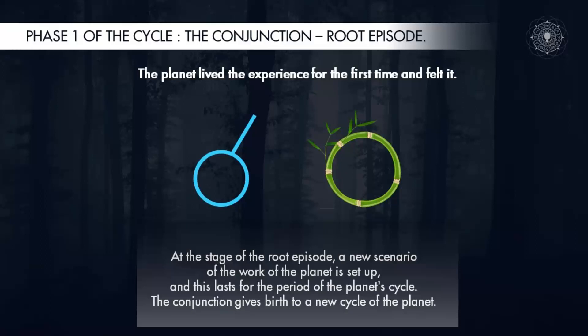The conjunction corresponds to the root episode. A root episode usually takes us back to childhood when a trauma occurred and developed into a root episode. A root episode may not obligatorily come from childhood; it can emerge at any time throughout our life. Such root episodes will not be as strong as those from childhood but will still play important roles. The root episode from childhood constitutes a central root; the following root episodes that emerge later are complementary. The conjunction shows how the energy will come to us naturally — at the conjunction, energy arrives according to both poles of the transforming planet at the same time.